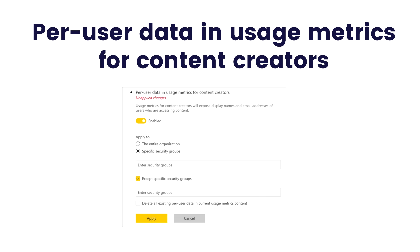There is another option: per-user data in usage metrics for content creators. In the same window, you can enable or disable it, or enable it for the entire organization or a specific group. As it states, usage metrics for content creators will expose display names and email addresses of users who are accessing the content, so please make sure you really want to enable this option.